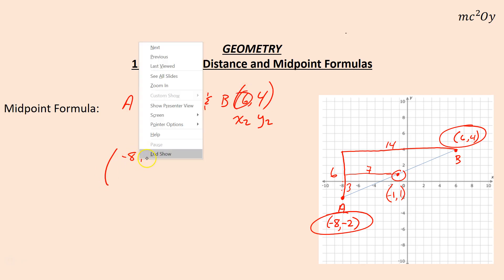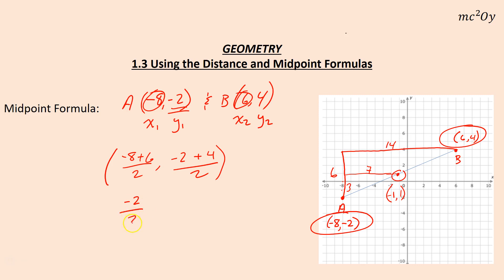The midpoint can be found by taking the average of the x's, so negative eight plus six over two, and negative two plus four over two. And that would end up giving us negative two over two, and two over two, which is negative one, one, which is the same midpoint we got right there.